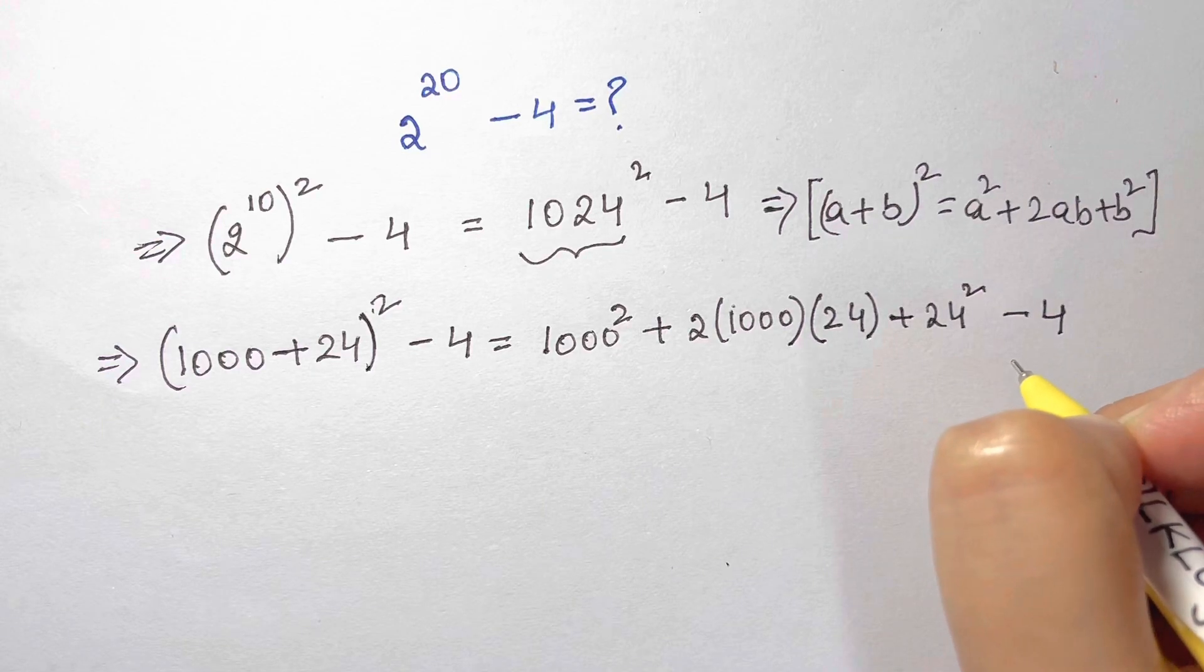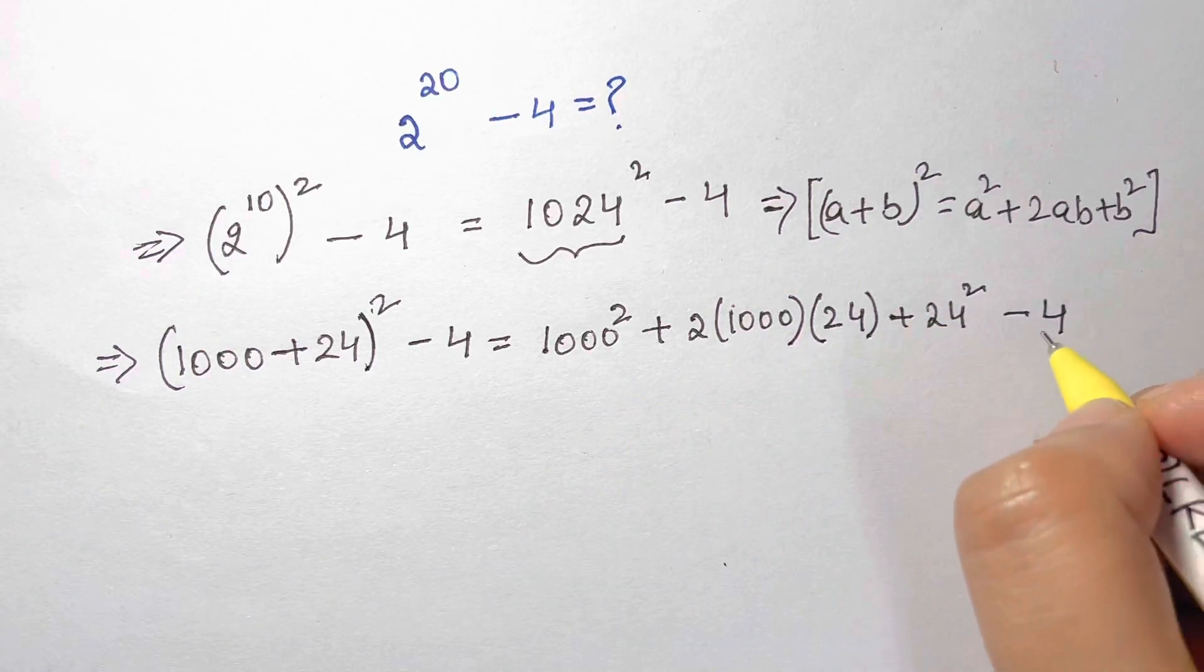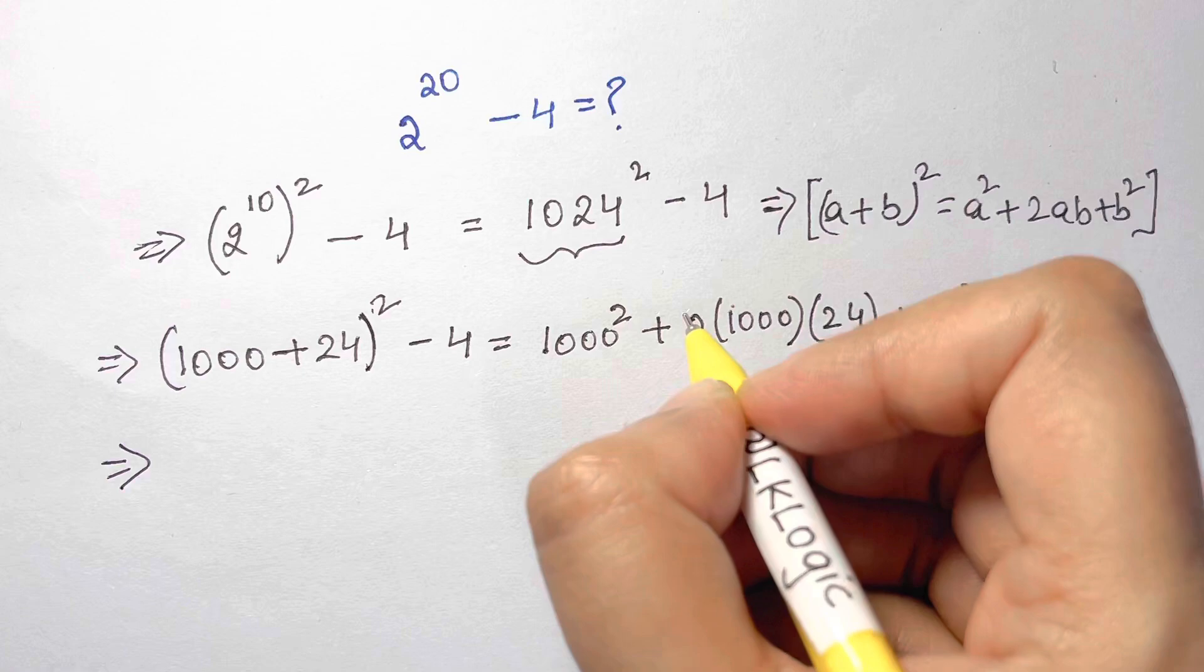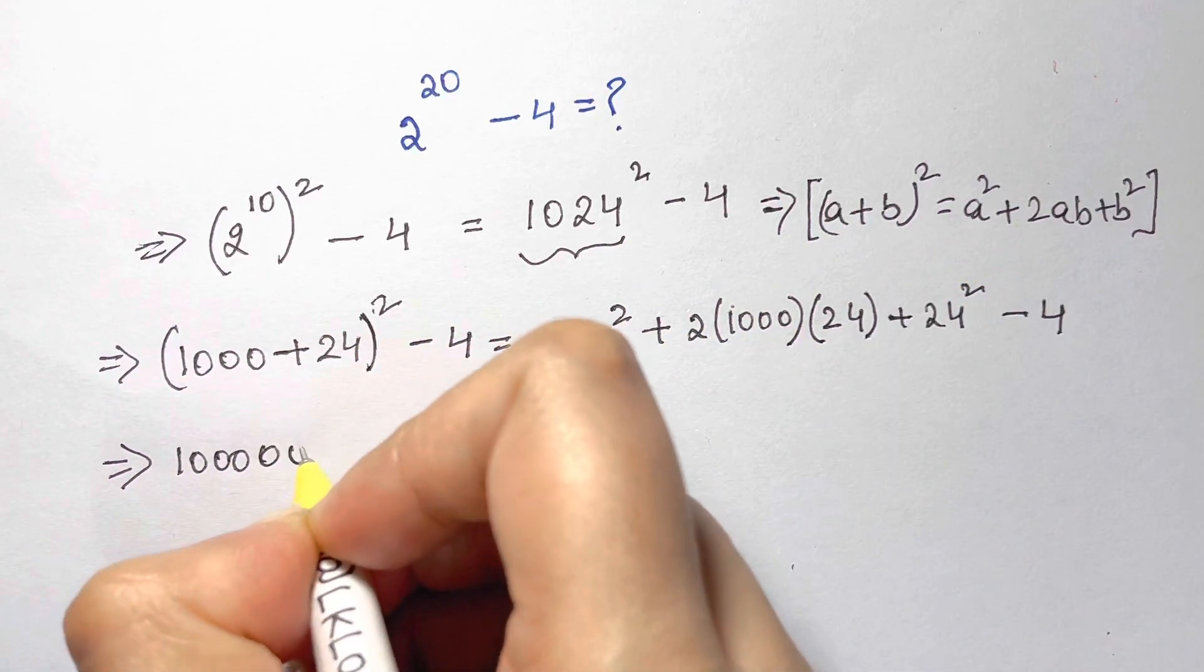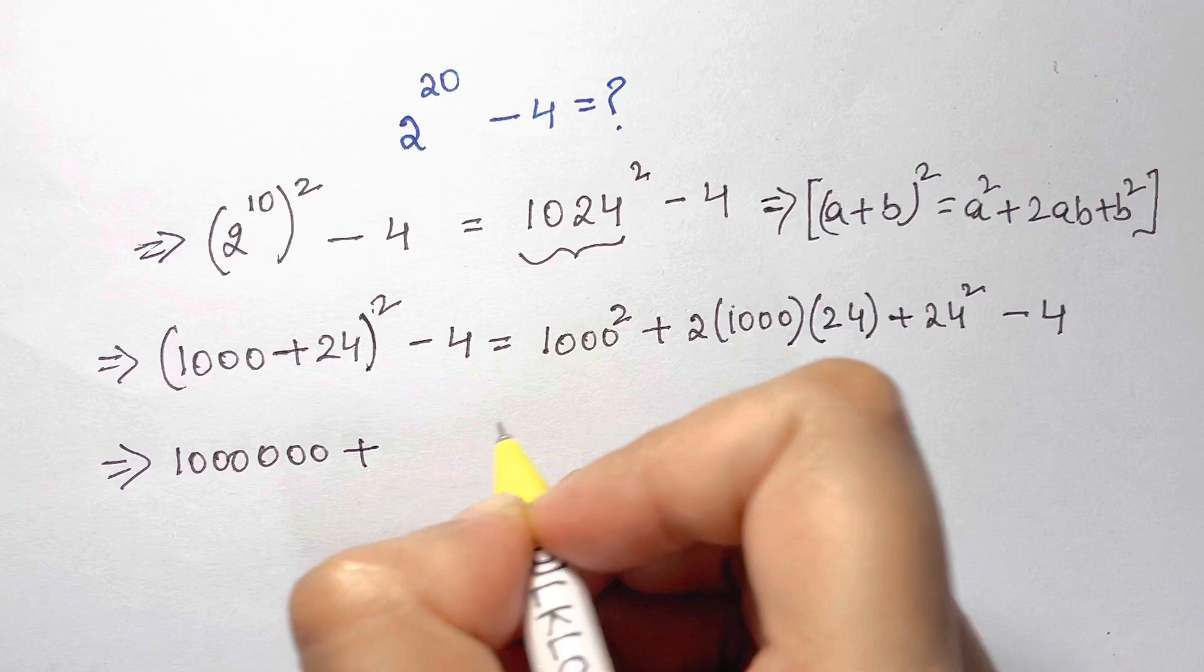Now we're going to solve for this one. So 1000 square is 1 million, plus 2 times 24 is 48, 48 times 1000 is 48,000, plus 24 squared.